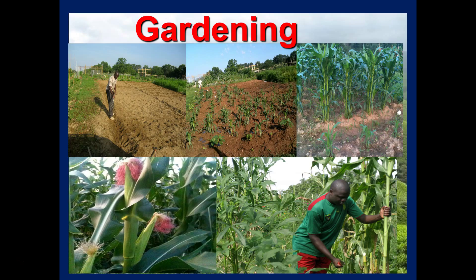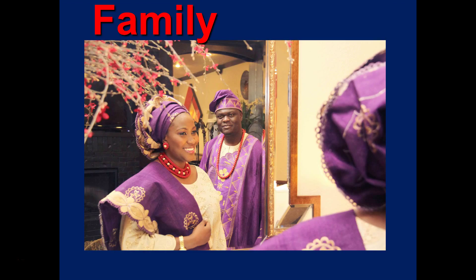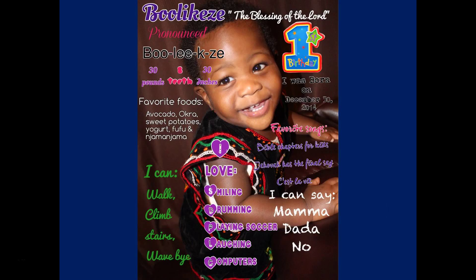My hobbies include gardening. I grew up on a farm, so gardening is one of my big hobbies — this is my garden in Auburn a few years ago. I also play soccer during my spare time. And I'm married; my wife's name is Fola Sade, and this is our son on his first birthday.